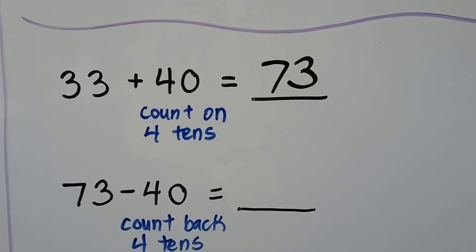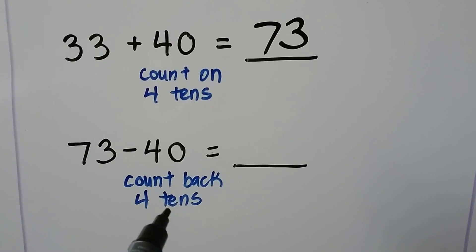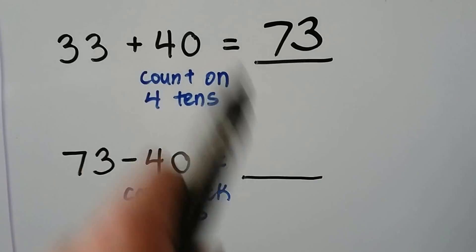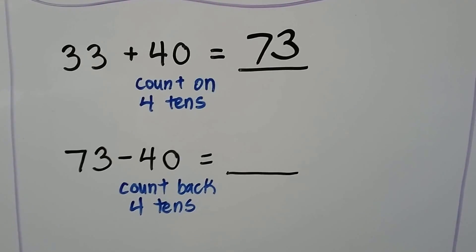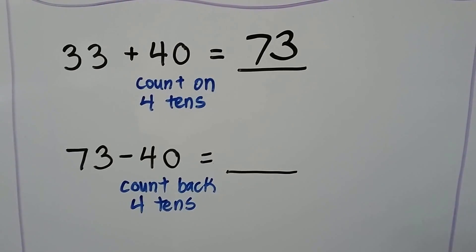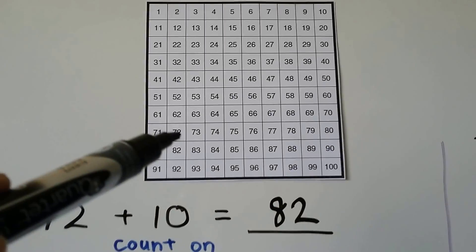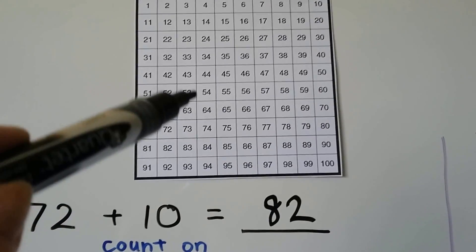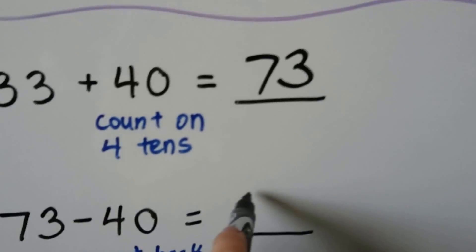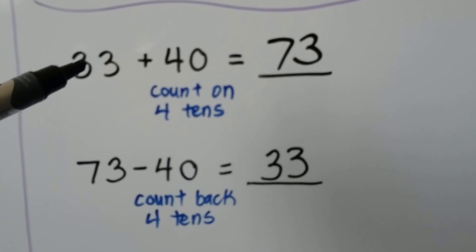We can write a related subtraction sentence: 73 minus 40, counting back four tens. Knowing that these are related number sentences, we start at 73 and count back four tens: one, two, three, four — landing on 33. The difference is 33, and if you look at the addition sentence, that was one of the addends.